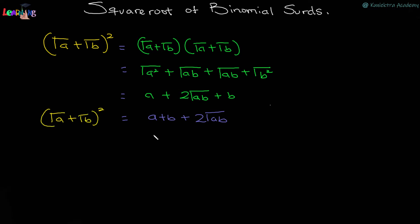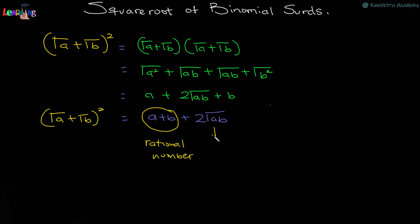I'll be using this to explain how we find the square root of binomial surds. The square of (√a + √b) gives us a + b + 2√(ab). Here, a + b is a rational number, and 2√(ab) is a surd. So when you square two binomial surds, you get a rational number plus a surd.